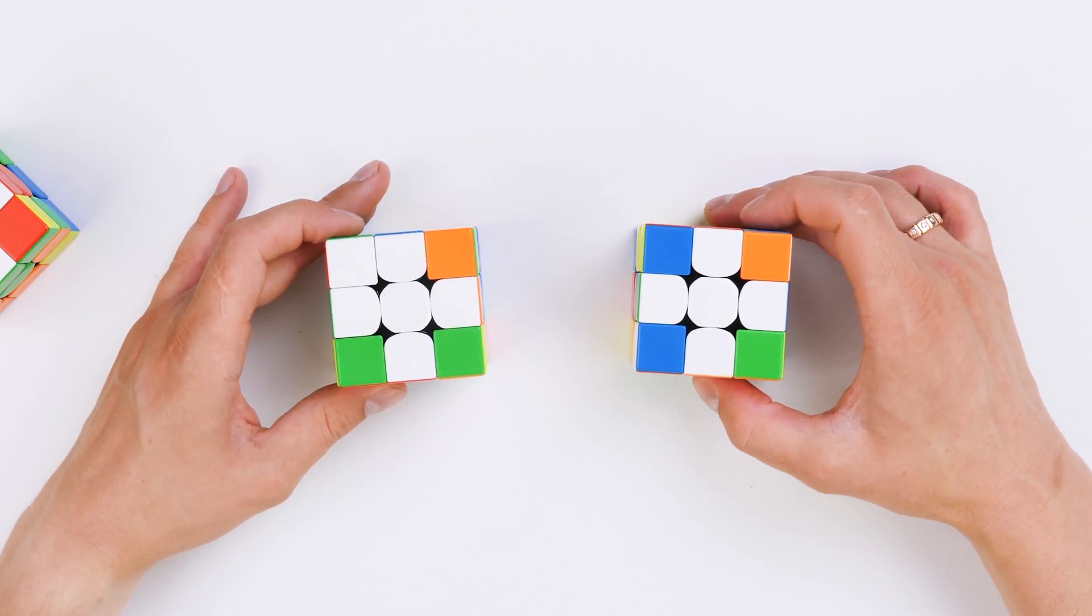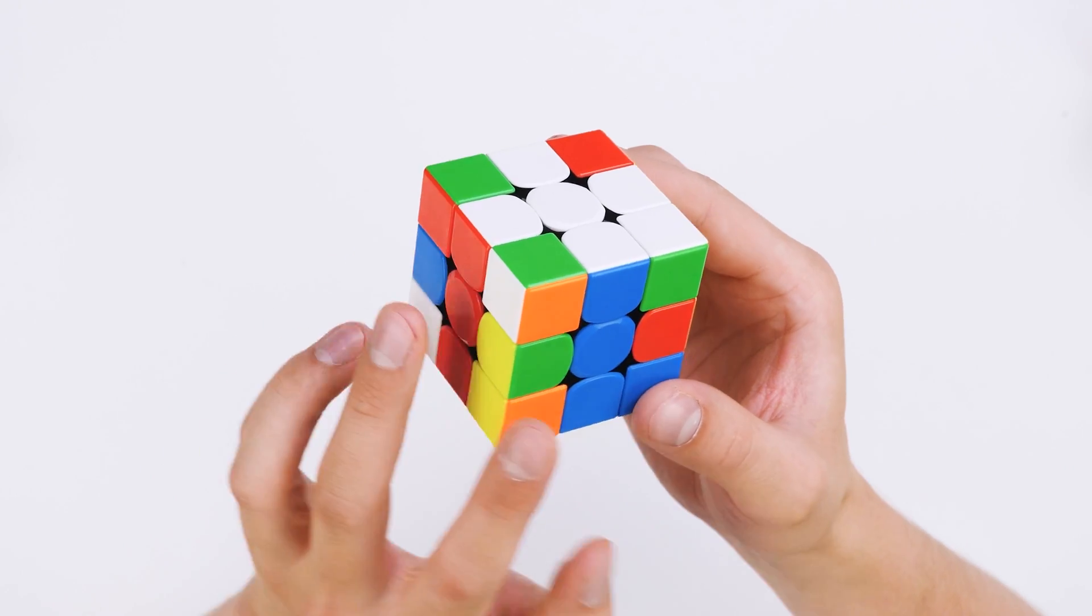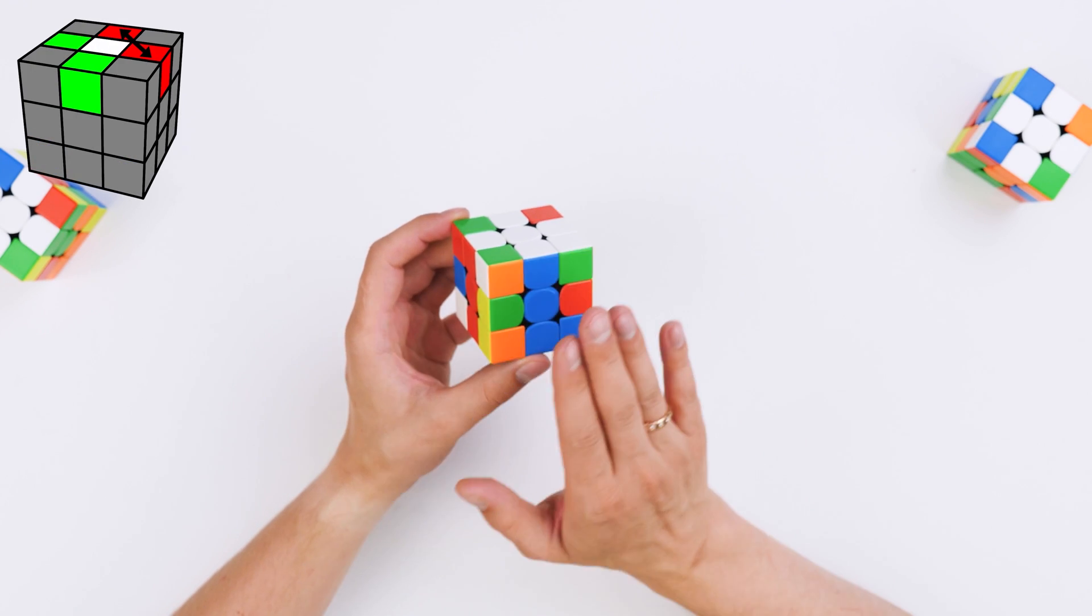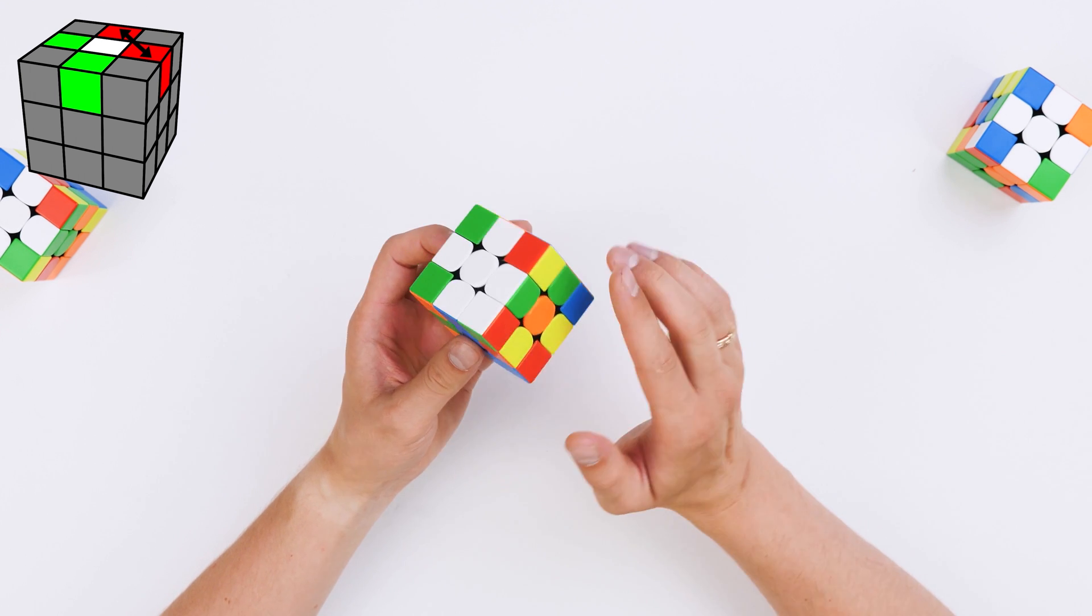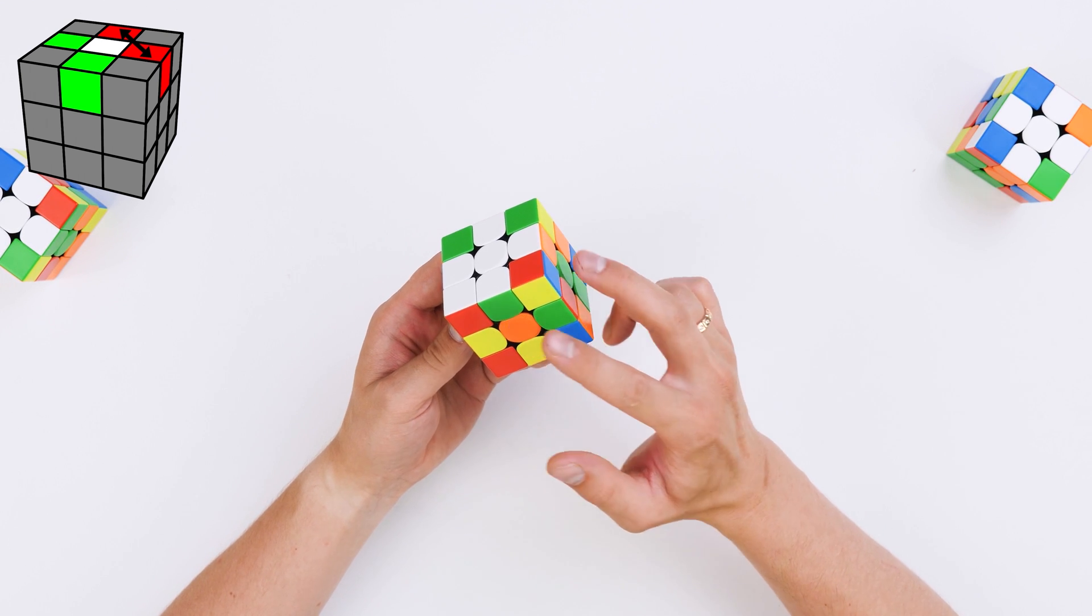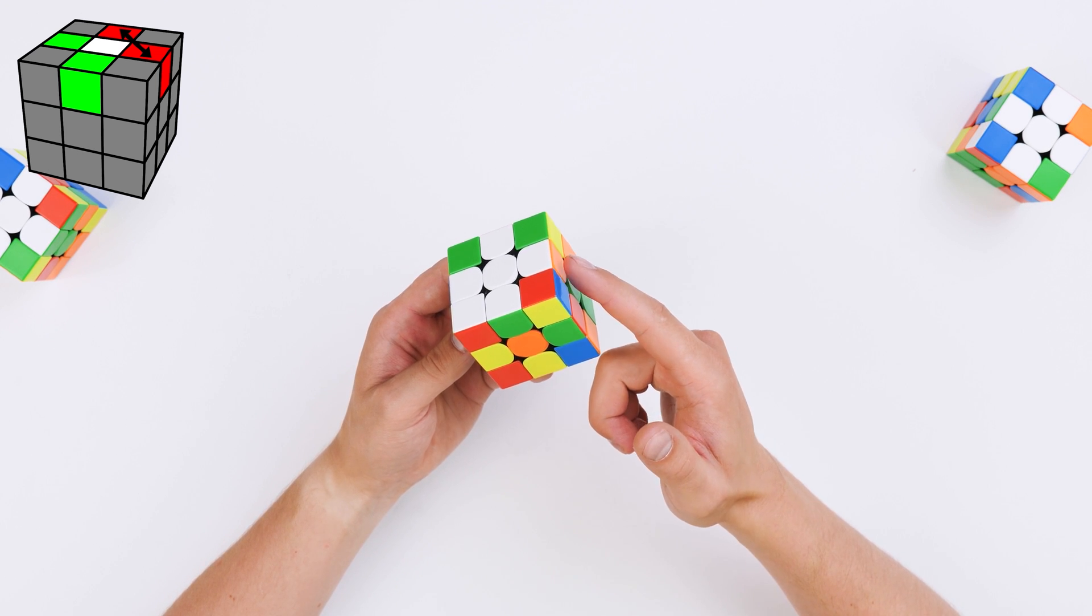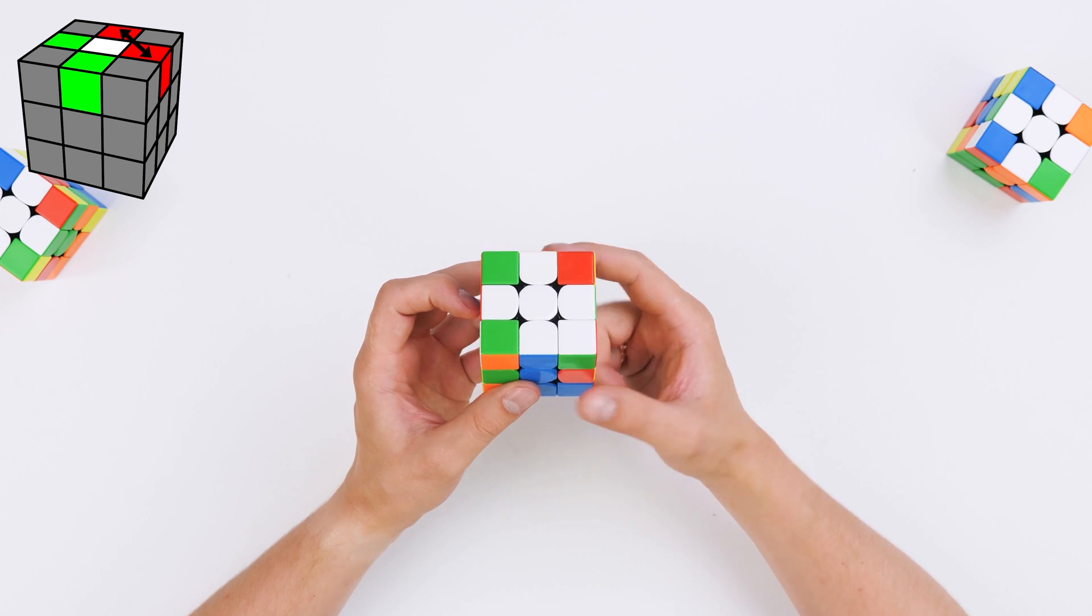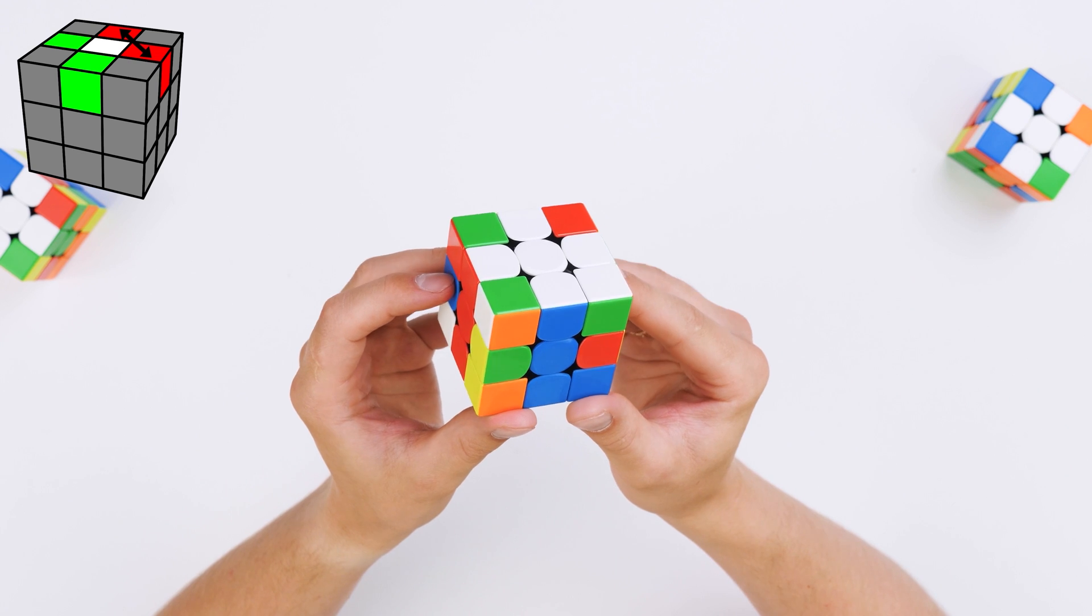First, consider the situation where we have two neighboring edges on the neighboring sides. For example, one is at the front and the other on the left. That means the back and right edges have to be swept. For example, here we have orange to go to the orange center and green to the green center. To do this, you need to make the following algorithm.